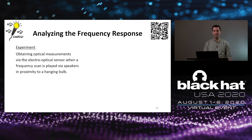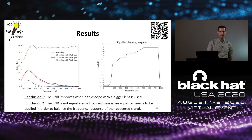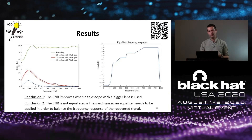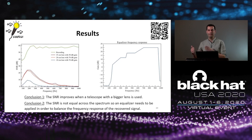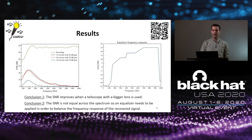We then analyzed the frequency response by obtaining optical measurements when a frequency scan was played near the hanging bulb, using three types of telescopes with different lens sizes. The first conclusion is that SNR improves when a telescope with a greater lens is used. The second conclusion is that SNR is not equal across the spectrum, so an equalizer must be applied to balance the frequency response of the recovered signal.